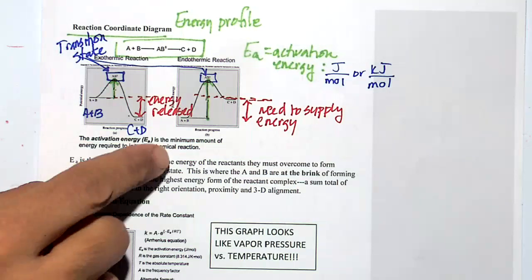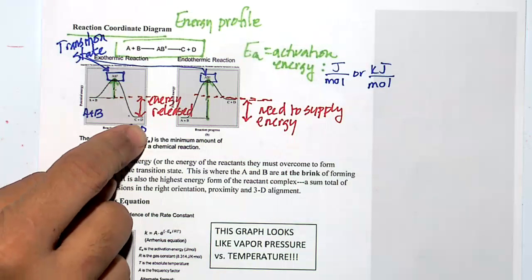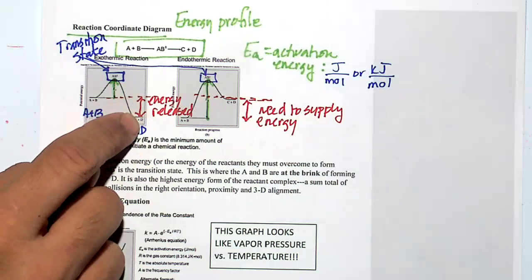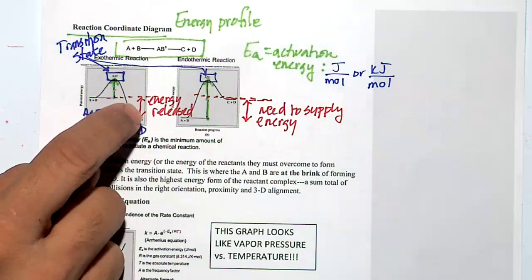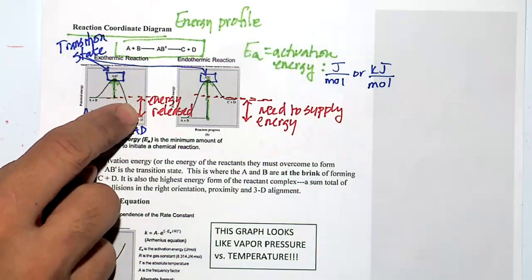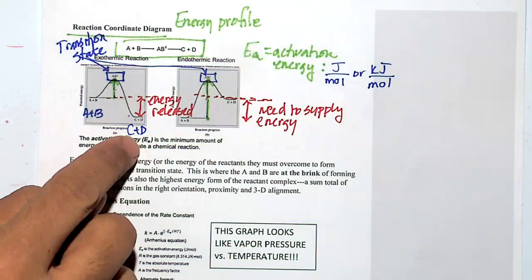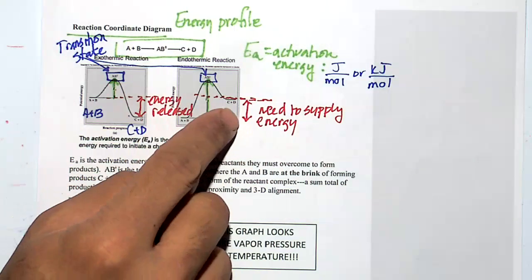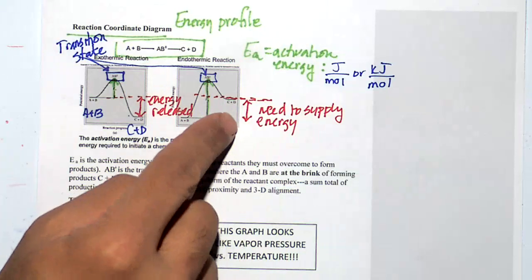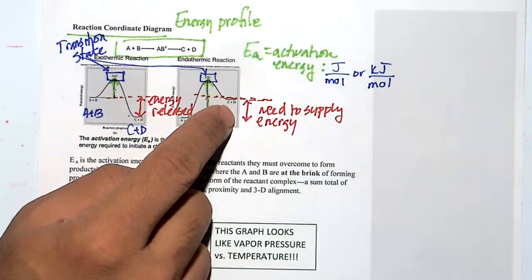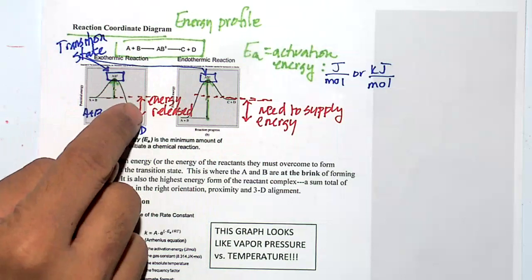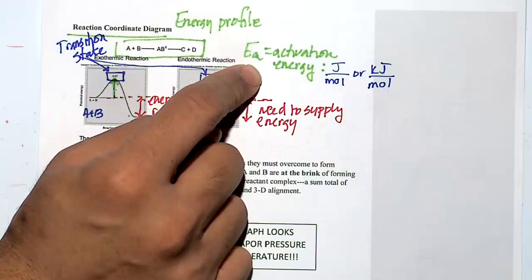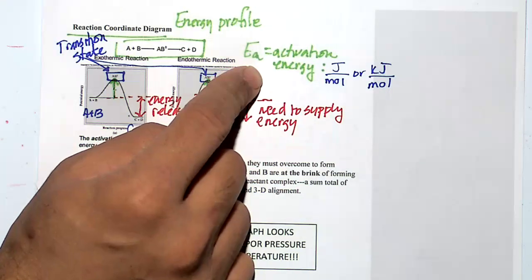Sometimes the reaction products are lower energy — we call that exothermic. The remaining energy gets released since we're at a lower energy space. If the products are at a higher energy, you need to compensate by putting in energy — that would be endothermic. This activation energy is dubbed EA, and it's just the hump.